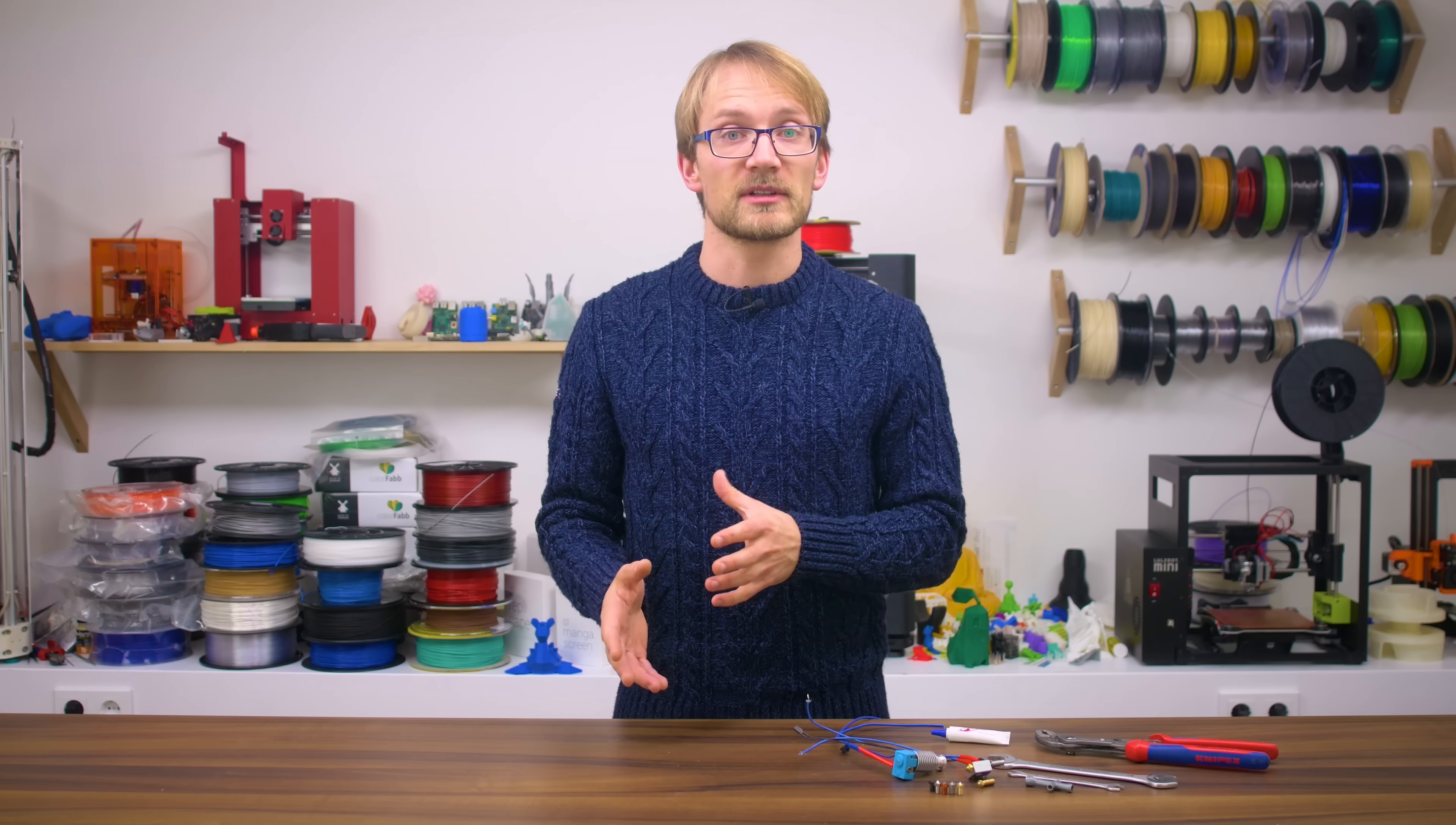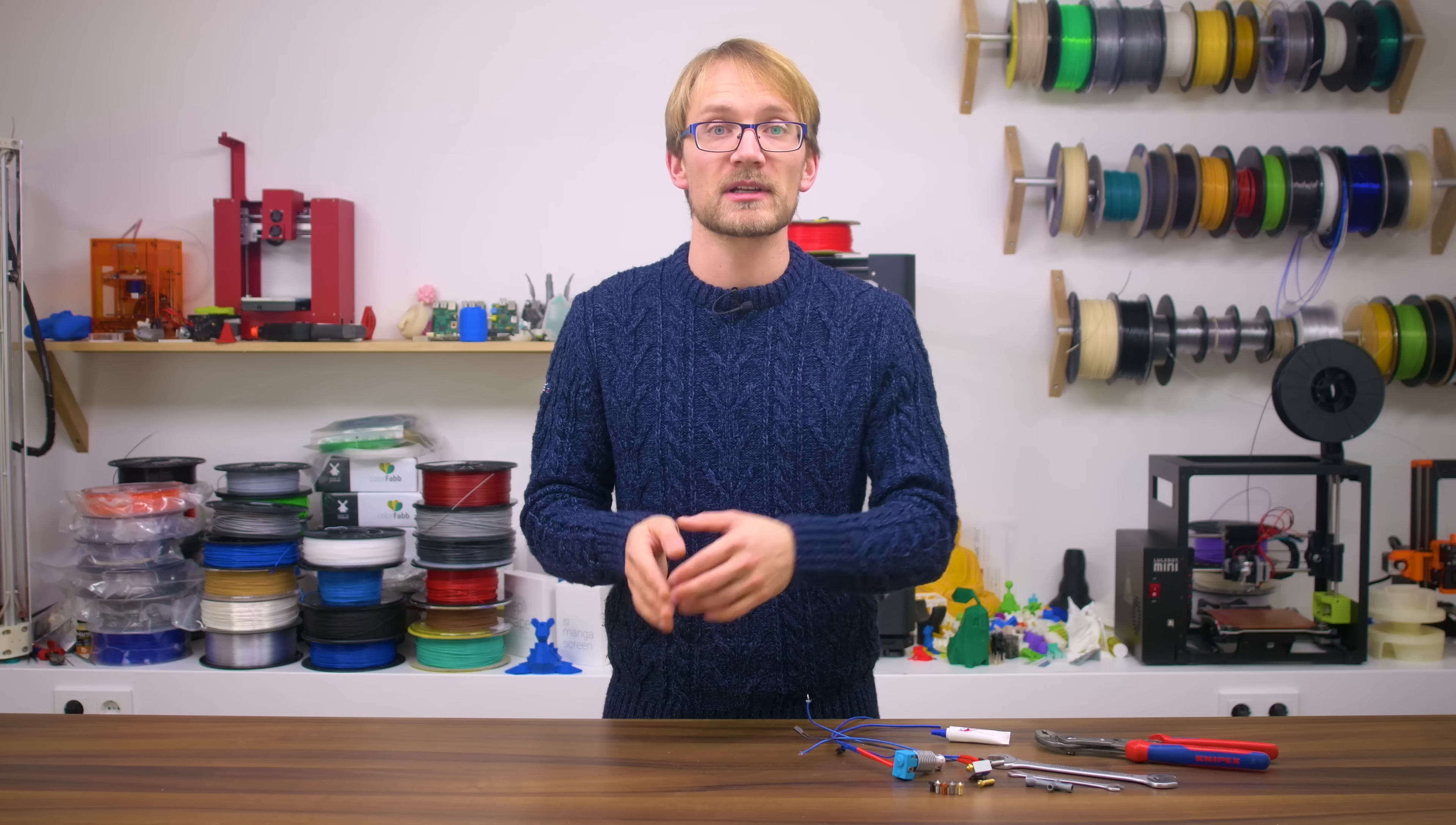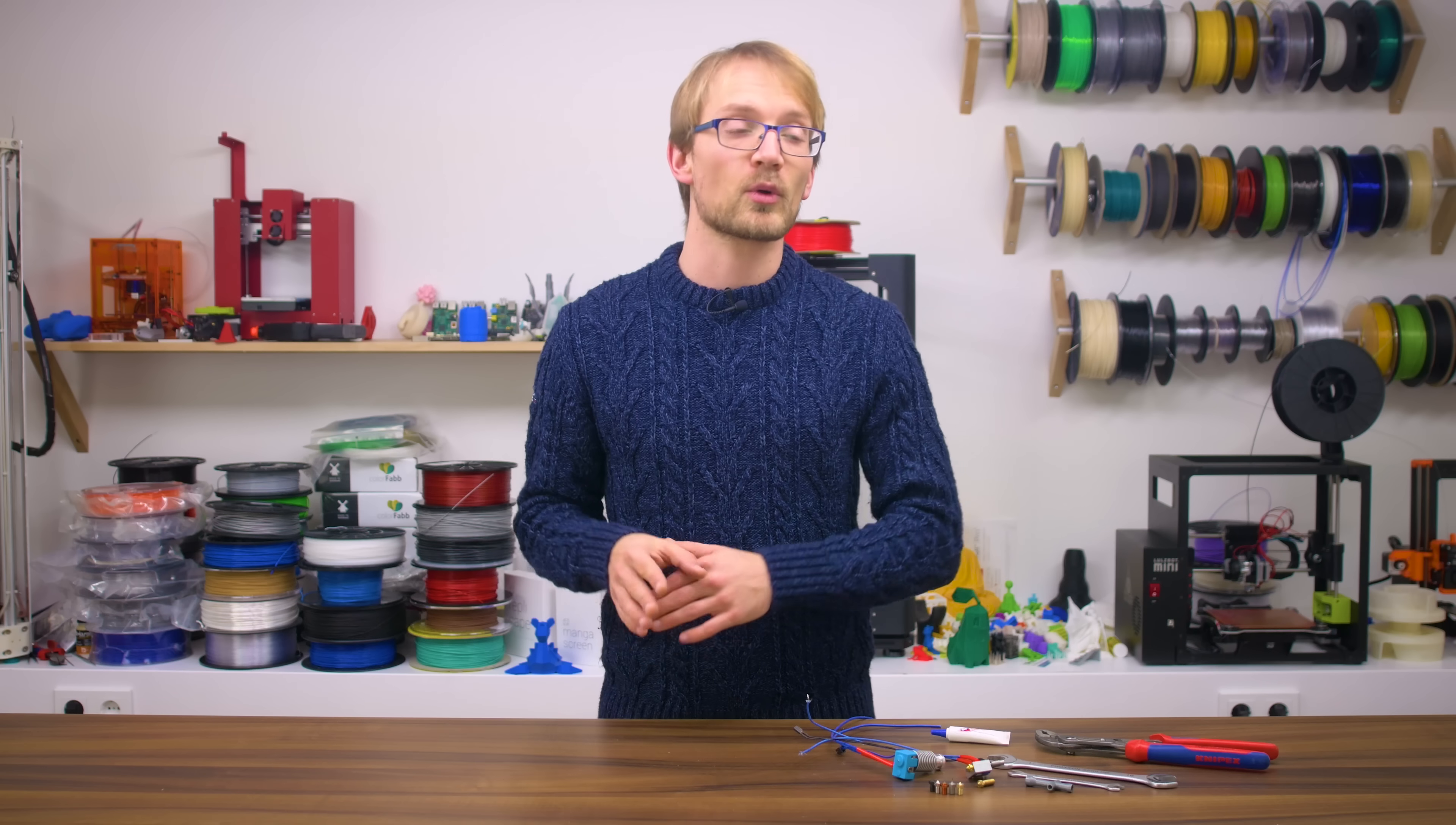Remember, righty-tighty, lefty-loosey, and this shouldn't take much torque at all. Then hold onto the heater block and unscrew the nozzle itself. Make sure to keep the block straight to avoid putting any forces on the heatbreak. Once the nozzle is out, clear out any debris that might be left on the hotend, and if your particular model uses a PTFE tube insert, this is a good opportunity to check that and make sure it's not deformed or worn down.